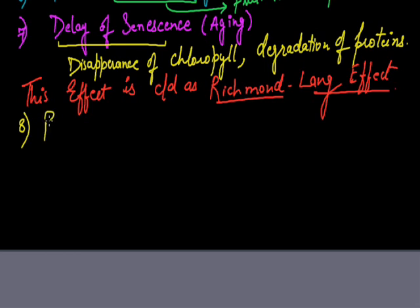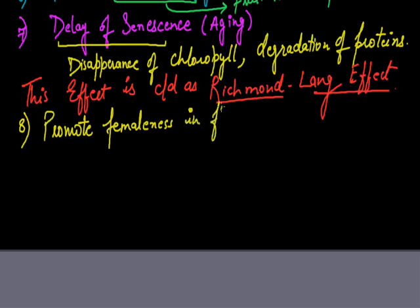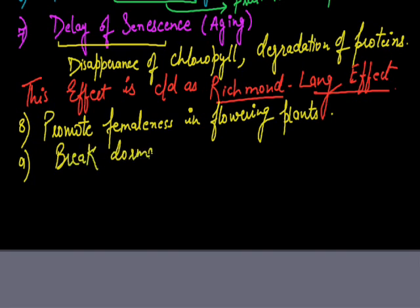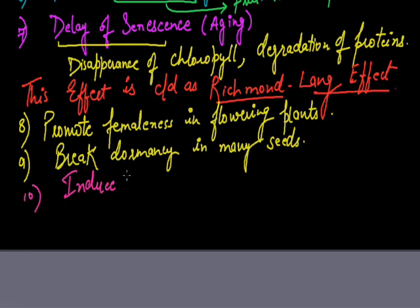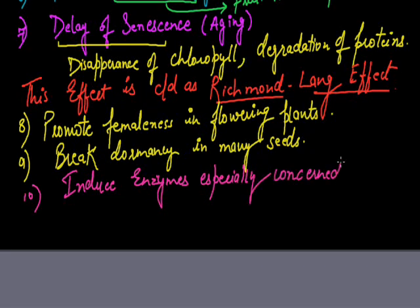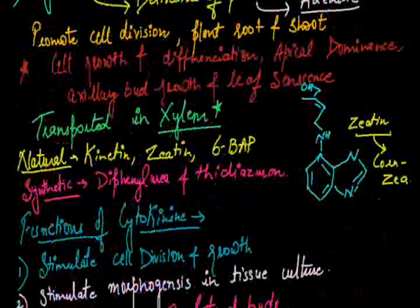The next point, it also promotes femaleness in flowering plants like auxin. The last is it also breaks dormancy, that is sleeping in many seeds. The last function for the cytokinin today is it also induces or stimulates enzymes specially concerned with photosynthesis. That's all for the function of cytokinins.